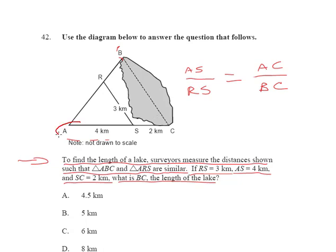The numerator is going to be 4, because we're comparing AS first. So we've got 4 here, over what? Over RS, which is 3.